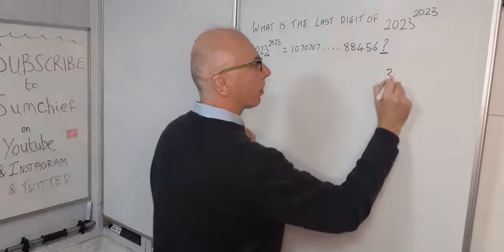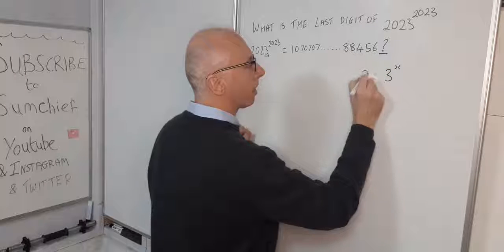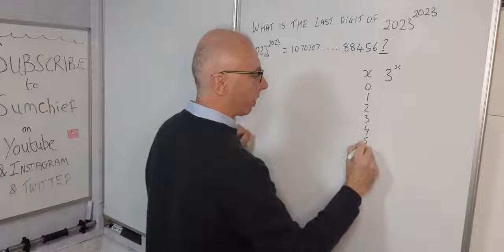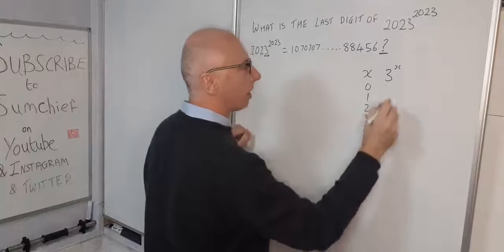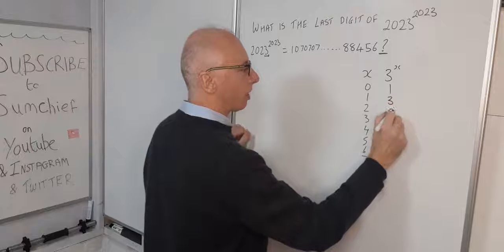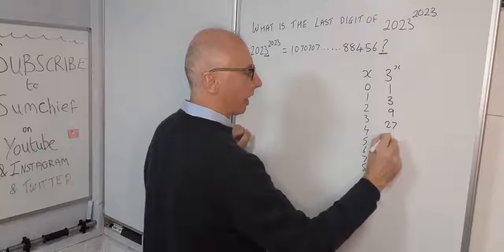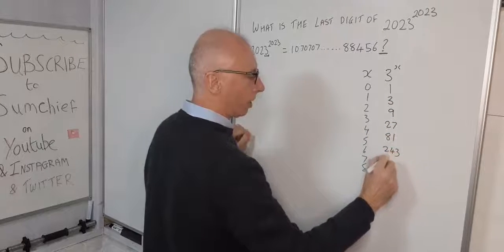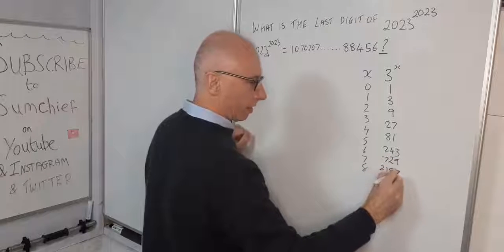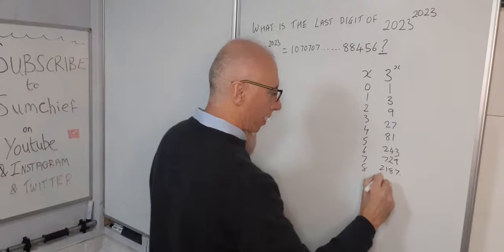3 to the power of x, where x is 0, 1, 2, 3, 4, 5, 6, 7, 8. 3 to the power of 0 is 1, then 3, 9, 27, 81, 243, 729, 2187, and 6561.